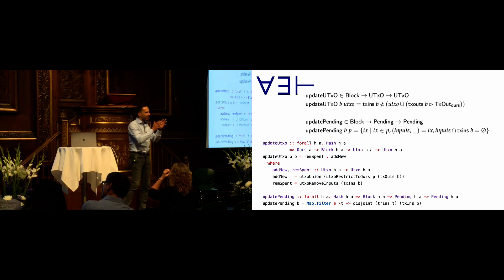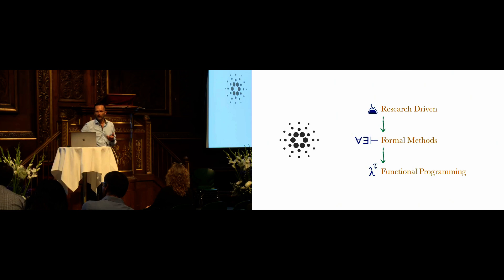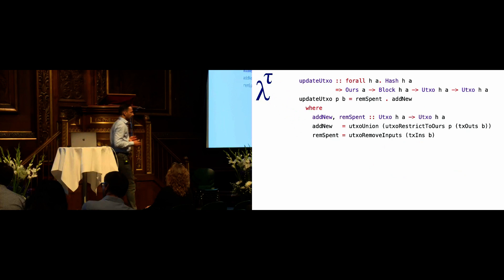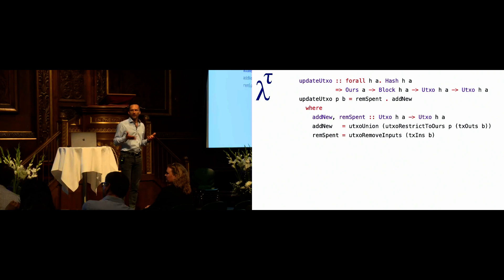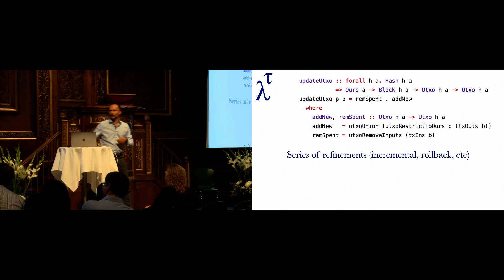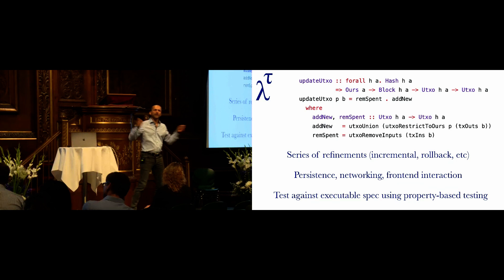So that's step two: we've started with the paper, gone through a mathematical specification, and arrived at code which reads quite similar to that specification and which we can already run. We can test it, look at whether it does what we want from a product point of view. Then we continue with our functional programming toolbox and go from this high-level executable prototype, adding the things needed to make it robust production code — incremental computations, rollbacks, network layer, databases.